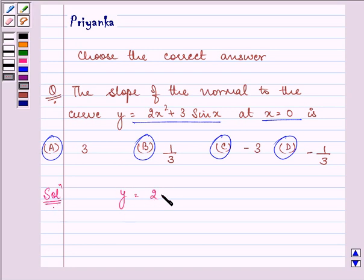We have y = 2x² + 3sin(x). dy/dx = 4x + 3cos(x).